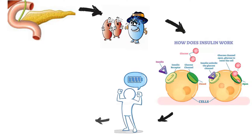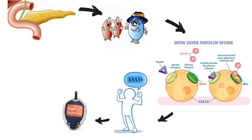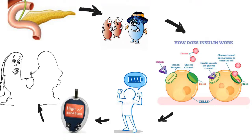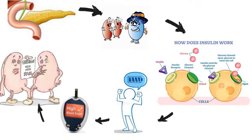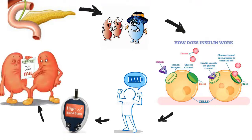Glucose passes into the cells to produce energy. Not being able to produce insulin or use it effectively leads to raised glucose levels in the blood, known as hyperglycemia. Long-term high glucose levels are associated with damage to the body and failure of various organs and tissues.